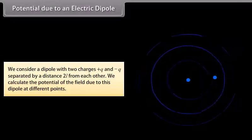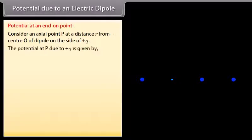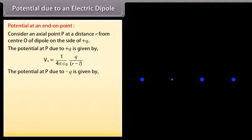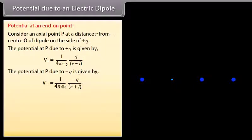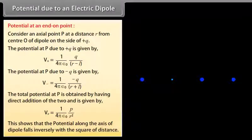For potential due to an electric dipole, consider a dipole with charges +Q and −Q separated by distance 2L. For the end-on point, consider an axial point P at distance R from center O on the side of +Q. The potential at P due to +Q is V₊ = (1/4πε₀)(Q / (R − L)), and due to −Q is V₋ = (1/4πε₀)(−Q / (R + L)). The total potential at P is V_E = (1/4πε₀)(P / R²), showing potential along the dipole axis falls inversely with the square of distance.